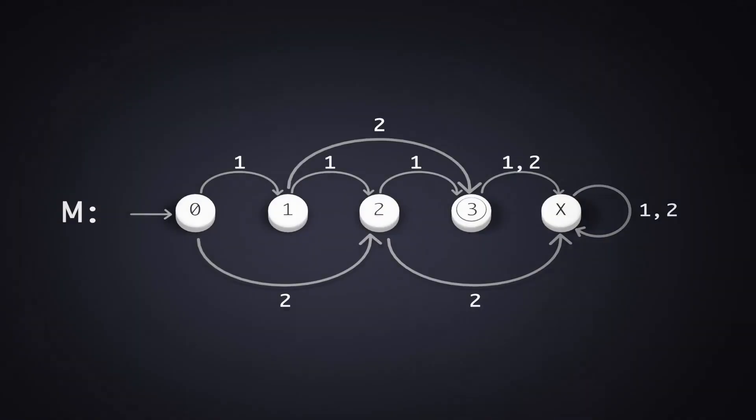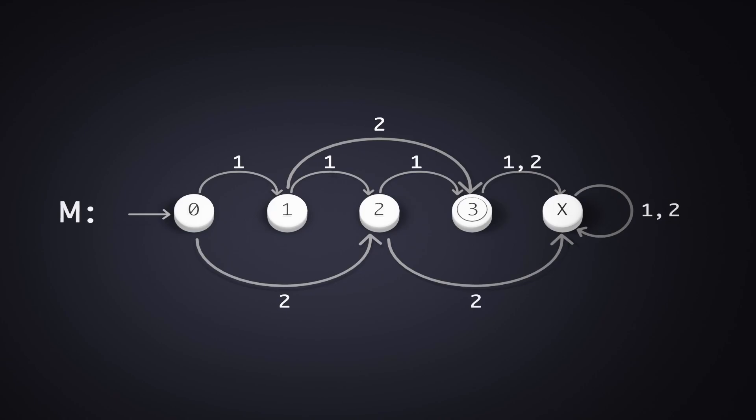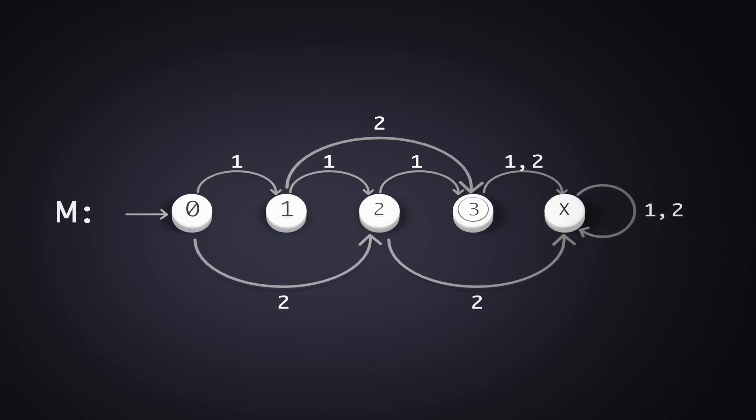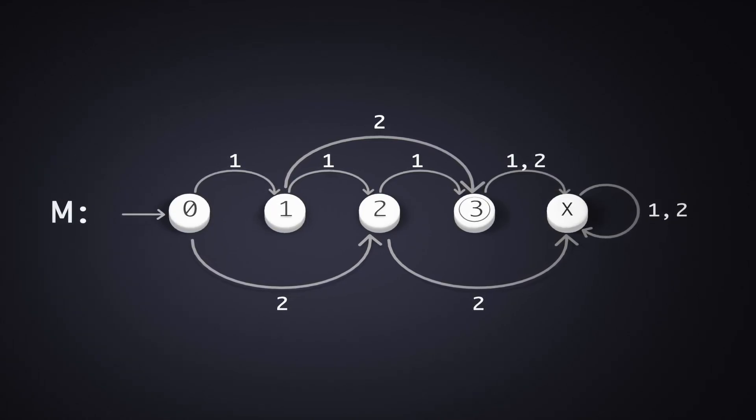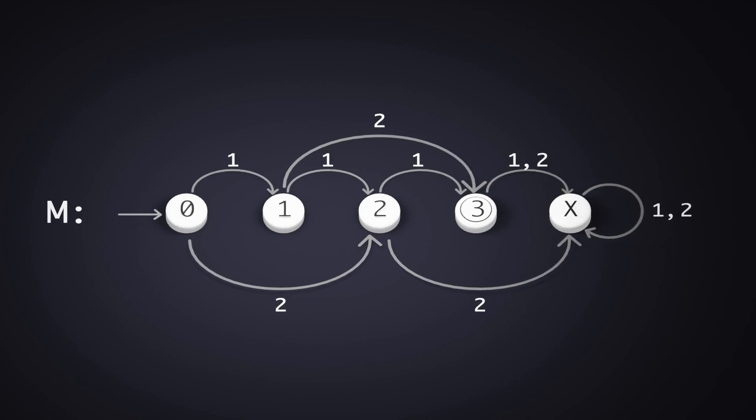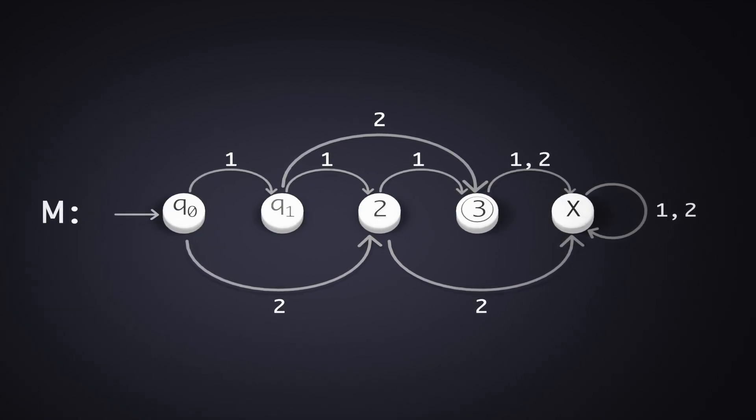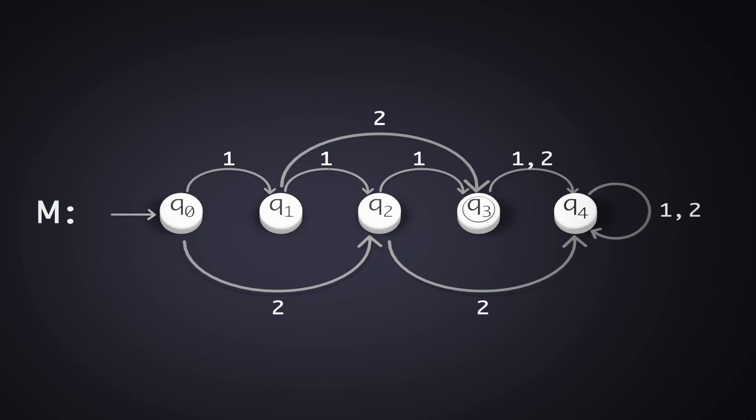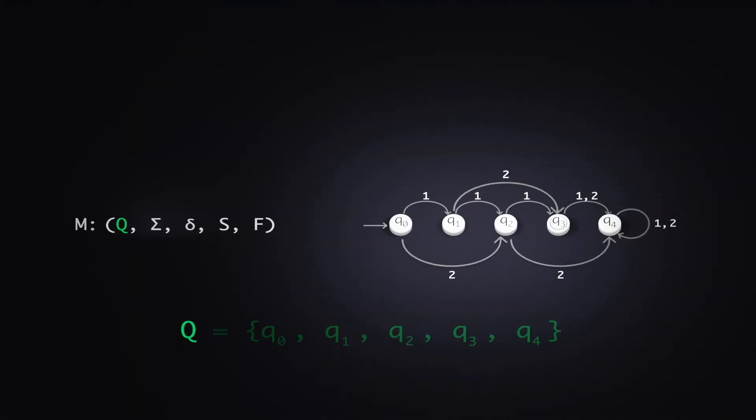Going back to the machine M, instead of calling the states in the vending machine 0, 1, 2, 3, and X, let us generalize it and call it Q0, Q1, Q2, and so on. This is Q, our set of states.